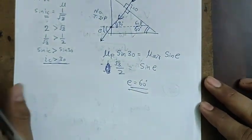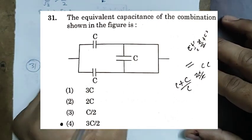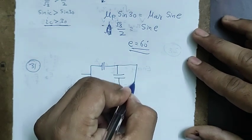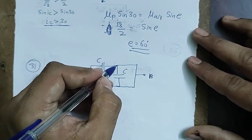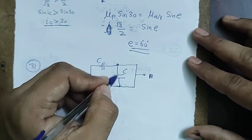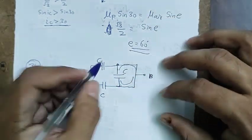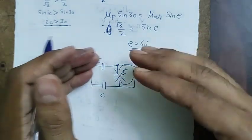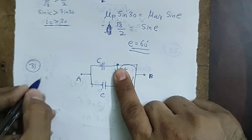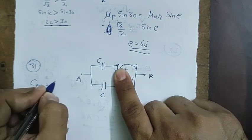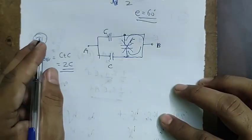Question 31: in the capacitor network, one capacitor has both terminals connected to the same point B, so it never gets charged and can be removed. The remaining two capacitors are in parallel, giving equivalent capacitance = C + C = 2C.